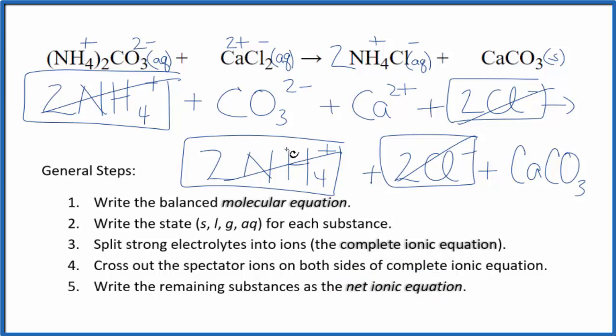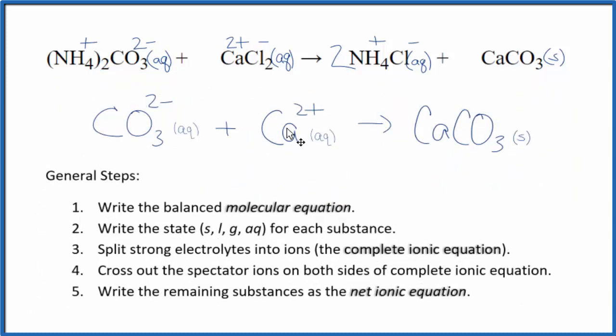Everything else is unique. And that gives us our net ionic equation for ammonium carbonate plus calcium chloride. Let me clean this up. I'll add the states in. We'll have our net ionic equation.